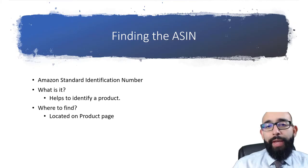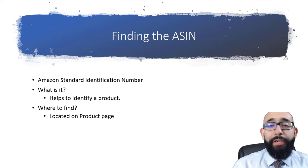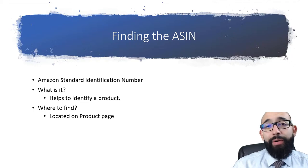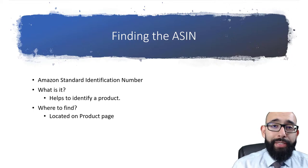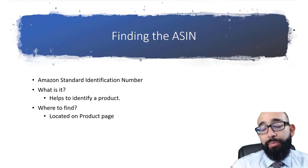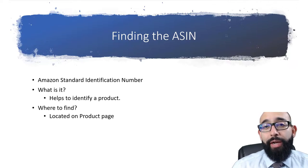The ASIN stands for Amazon Standard Identification Number, and there are two different ways to find it. It's a 10-character alphanumeric identifier that is assigned by Amazon so it can be specific in their catalog for that specific product.